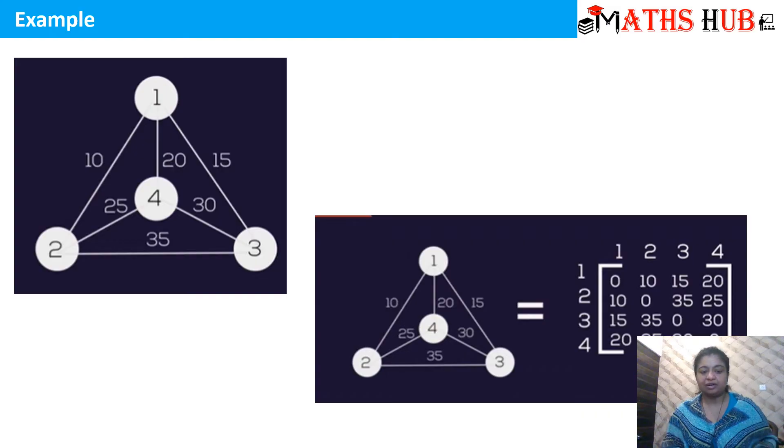We are given a problem and this is the cost matrix. Between vertex 1 and vertex 1 there is no cost. Between vertex 1 and vertex 2 the distance is 10. Between vertex 1 and vertex 3 the distance is 20. Between 1 and 4 the distance is 20. If we put the distances on these vertices, this is how we get the graph.